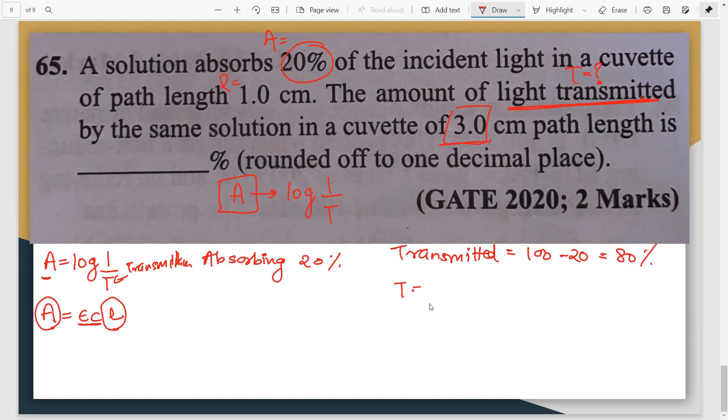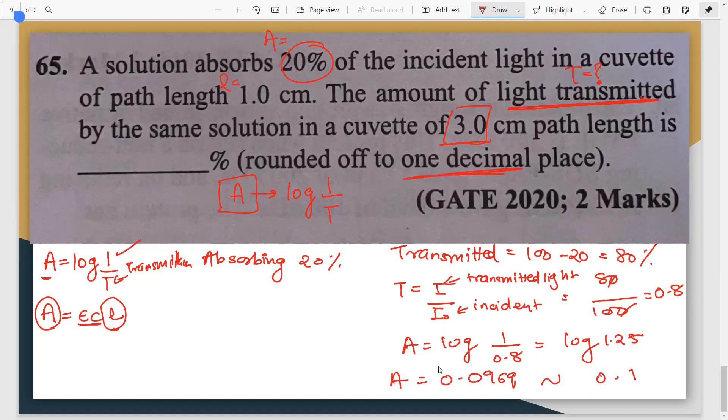So what is the transmittance? Transmittance has to be found. Transmittance is given by the formula I upon I0. I is the light that has been transmitted. I0 is the light that is incident. We know incident is 100, transmitted is 80. So how much does this come to be? 0.8. So we got the value of T. Now you can put it in this formula. So what is absorbance? Log of 1 by 0.8. Now log of 1 by 0.8, so first you do 1 by 0.8 that comes out to be 1.25. Now log of 1.25 is 0.0969, which we can approximately take because they are telling us to anyways round off. So it will be 0.1. That is the absorbance.